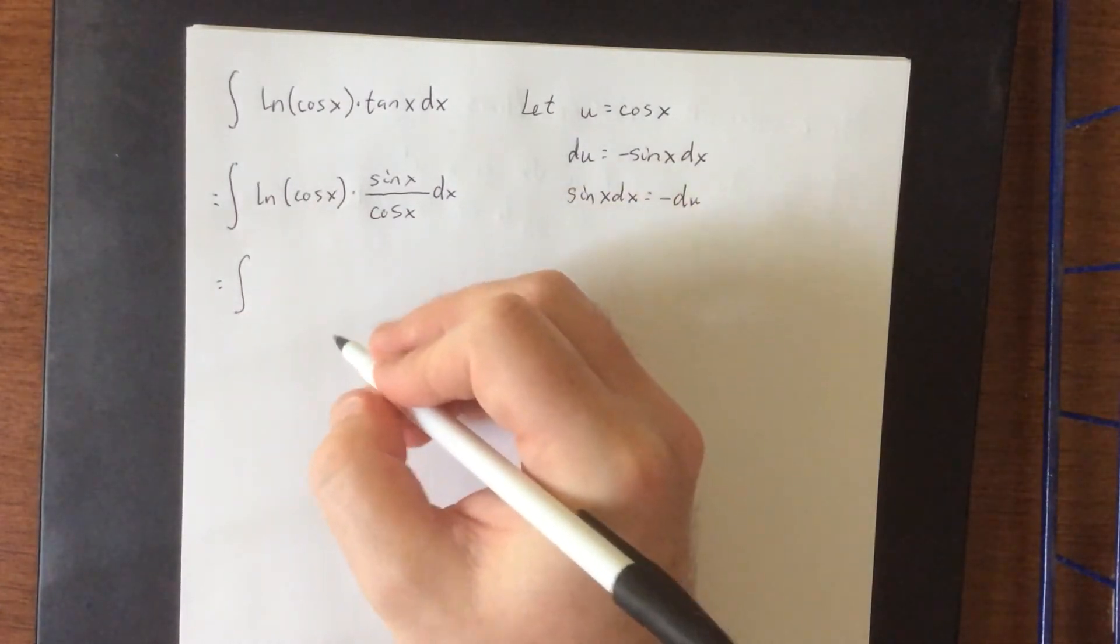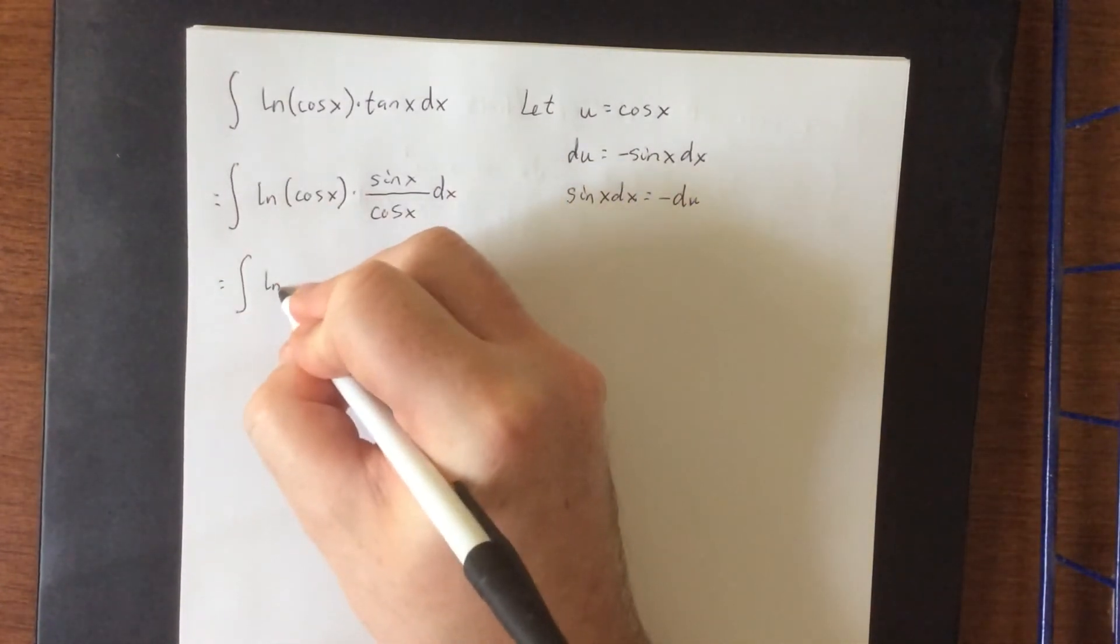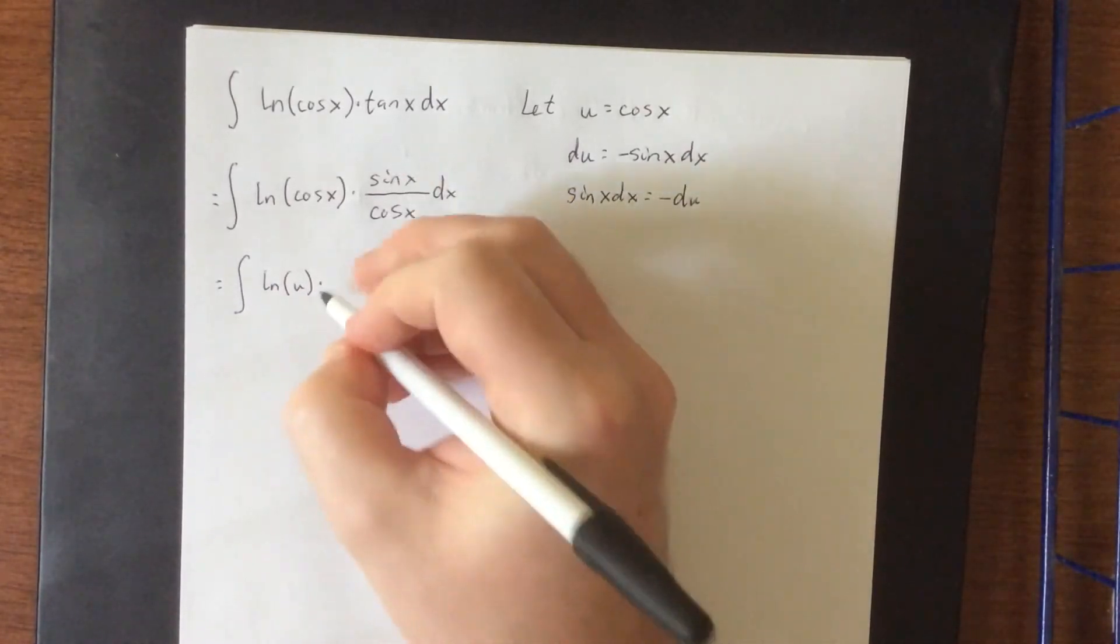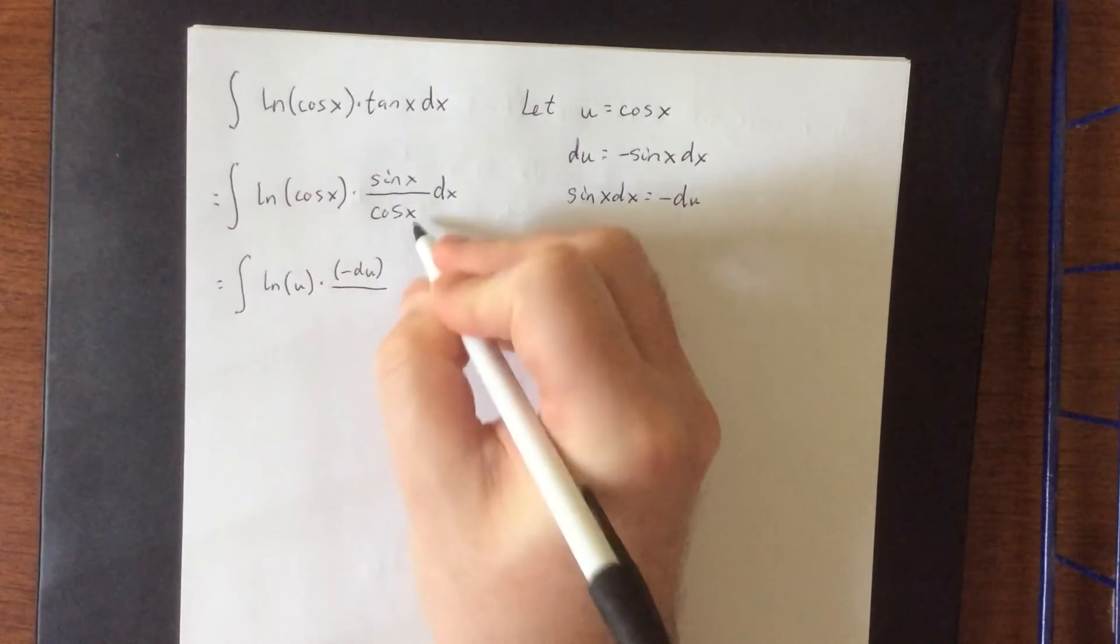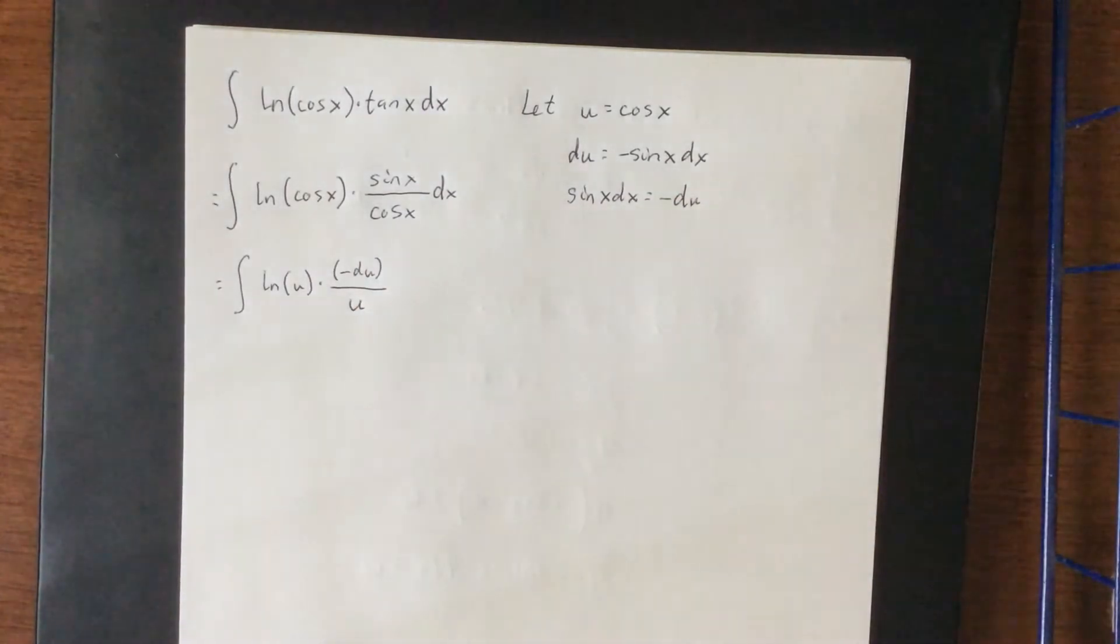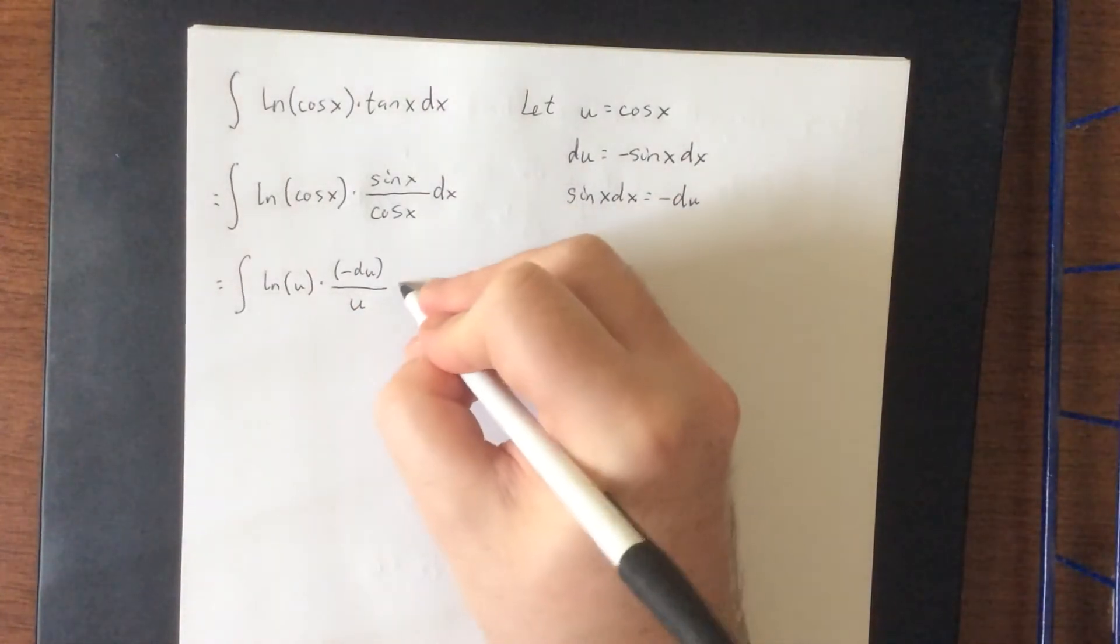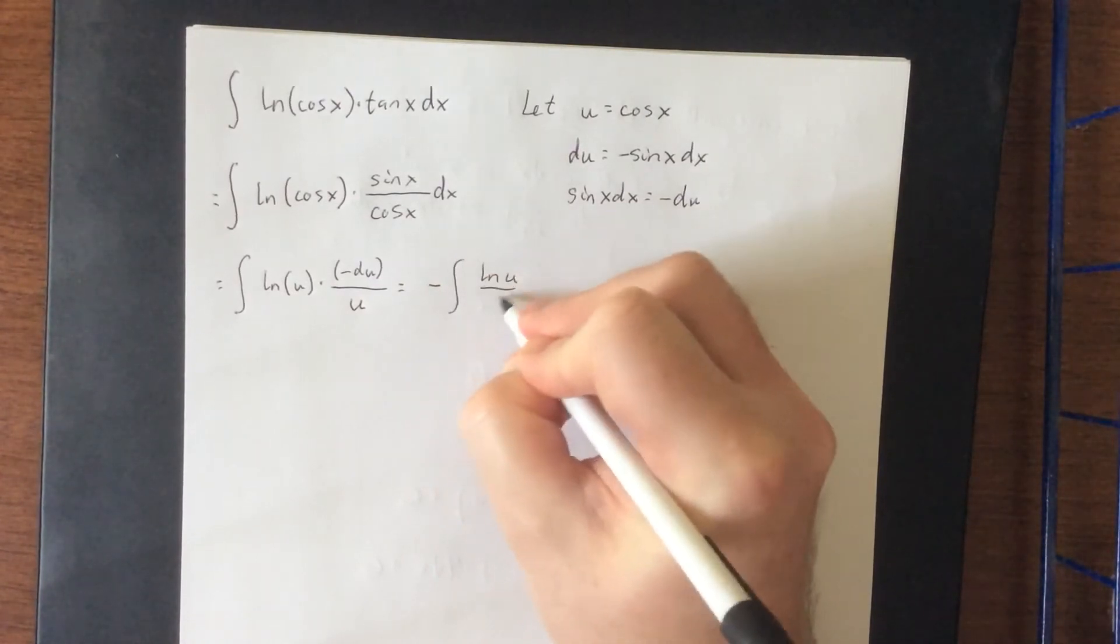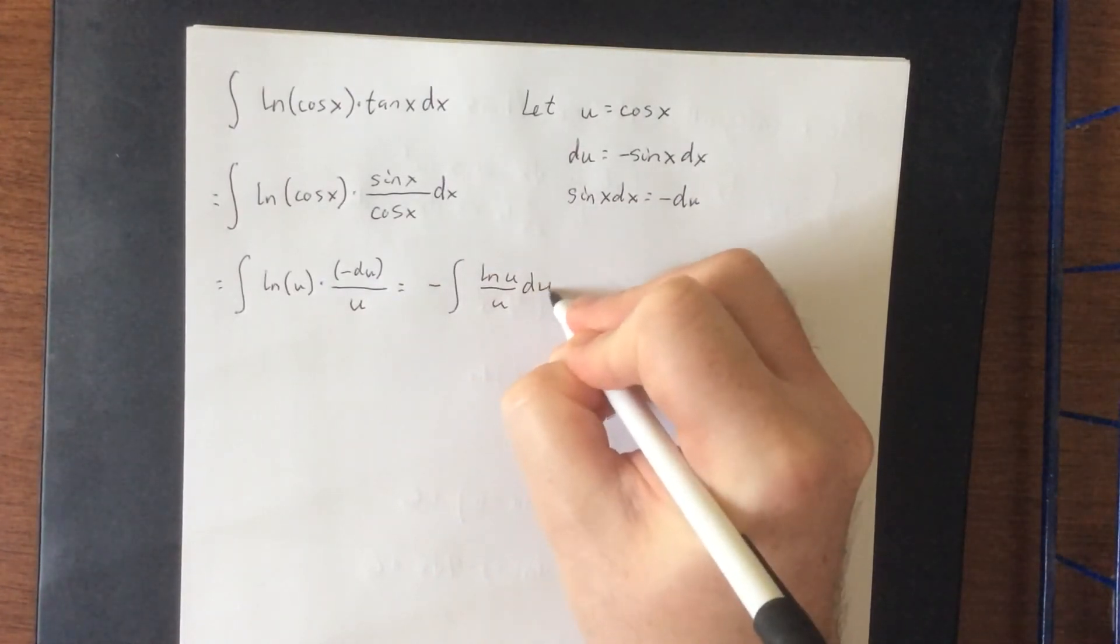So this would be the integral of, this would become the natural log of u times, sine of x dx will become negative du, and the cosine of x will become u. Then it looks like it should probably be cleaned up a bit, so we'll call this the negative natural log of u divided by u times du.